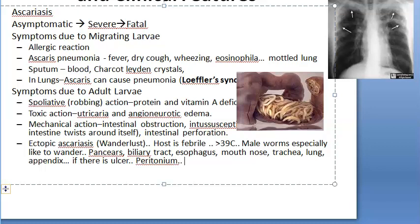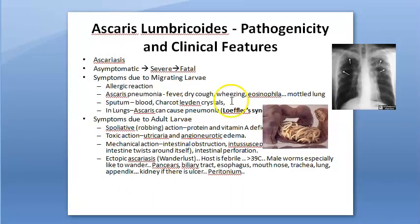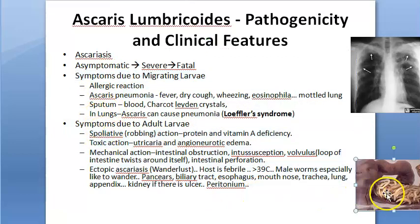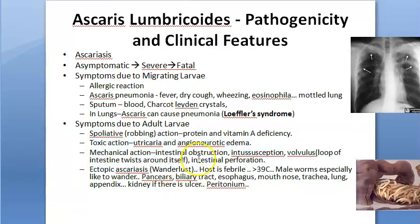This wandering tendency makes preoperative deworming necessary before any gastrointestinal surgery in endemic areas. The wandering worm may also reach the kidney. To summarize clinical features: migrating larvae cause allergic reactions and lung-related symptoms; adult worms cause intestinal problems — ectopic ascariasis, spoliative action, toxic action, and mechanical action — all important examination topics.